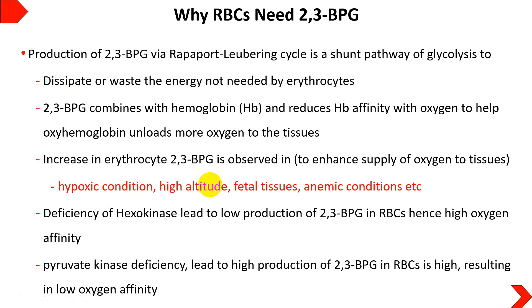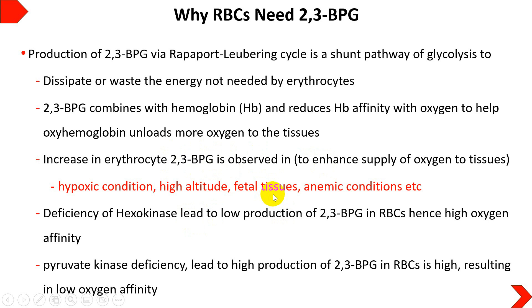When hemoglobin has lower oxygen affinity due to elevated 2,3-BPG, more oxygen is unloaded to the tissues, reducing the severity of hypoxic conditions, high-altitude effects, or fetal tissue oxygen deficit. This is one of the ways red blood cells adopt the Rapoport-Luebering Cycle as a supplementary pathway — to increase 2,3-BPG levels so that more oxygen can be delivered to tissues when the body demands it.